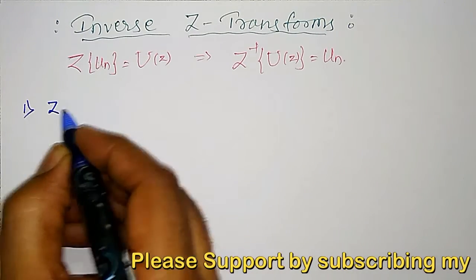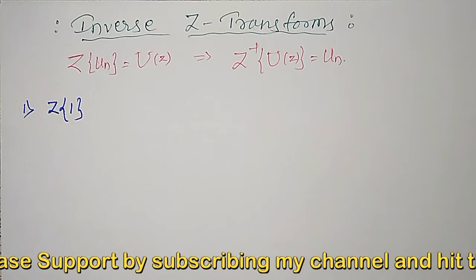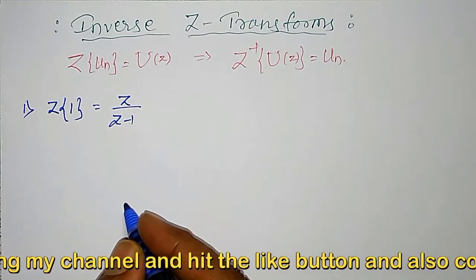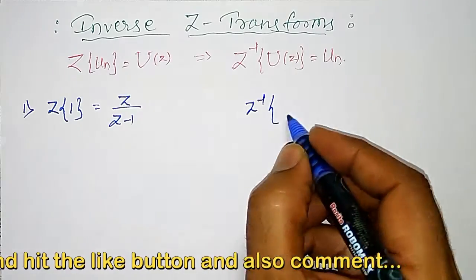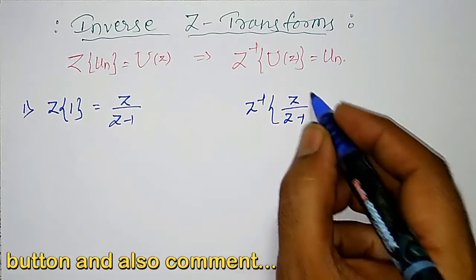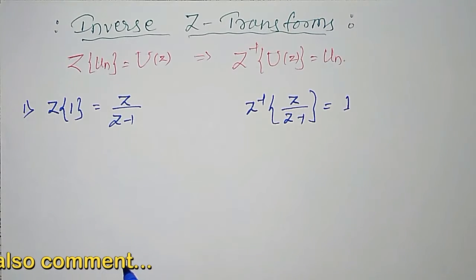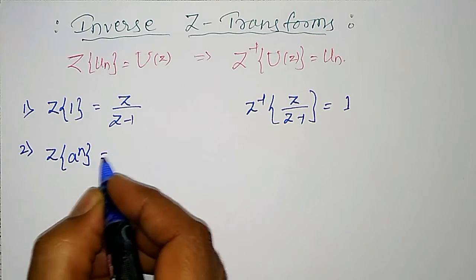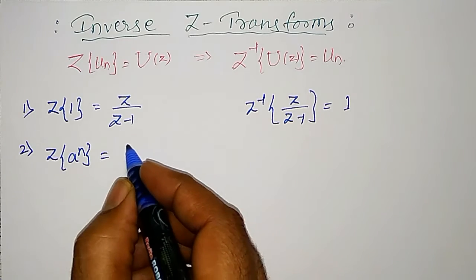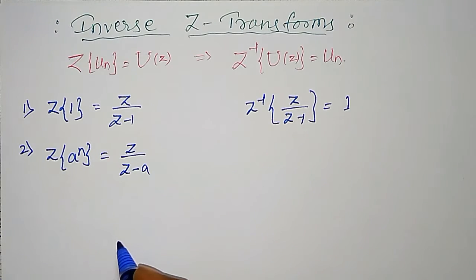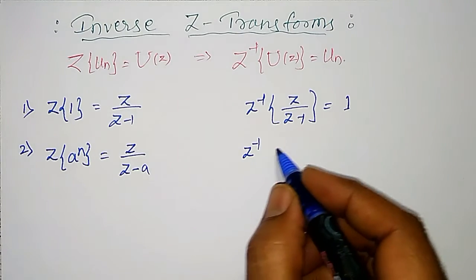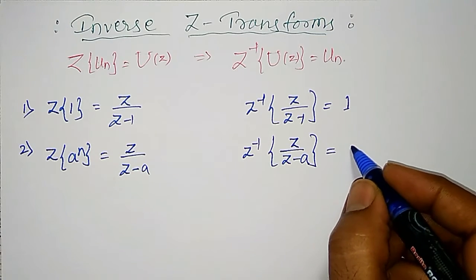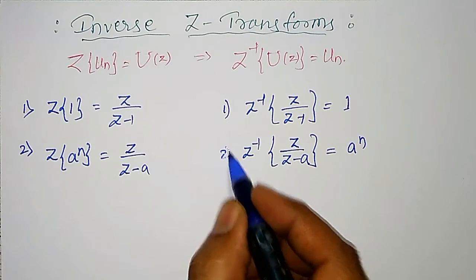Z-transform of 1: if U(n) is equal to 1, then its Z-transform is given by Z divided by Z minus 1. Therefore, inverse Z-transform of Z/(Z-1) equals 1. Similarly, Z-transform of A raised to N is Z divided by Z minus A. Therefore, inverse Z-transform of Z/(Z-A) equals A raised to N. This formula I am going to use many times.